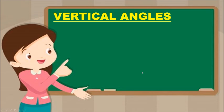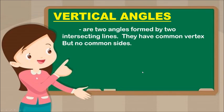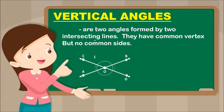Next is Vertical Angles. Vertical angles are two angles formed by two intersecting lines. They have a common vertex but no common sides. This is how vertical angles look.